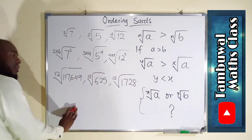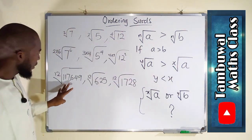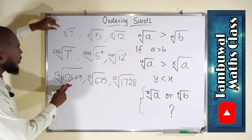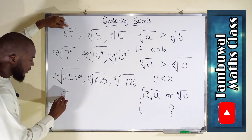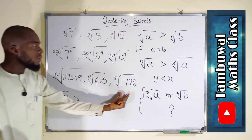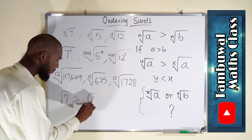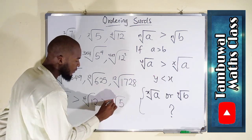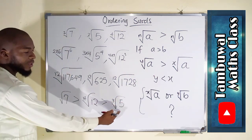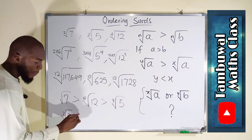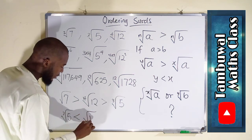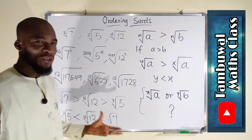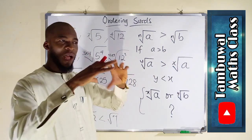Now they all have the same degree 12. Applying the first condition, we compare the radicands: 117,649 is the greatest, followed by 1,728, then 625. So square root of 7 is the greatest, followed by fourth root of 12, followed by cube root of 5. In ascending order: cube root of 5 < fourth root of 12 < square root of 7.